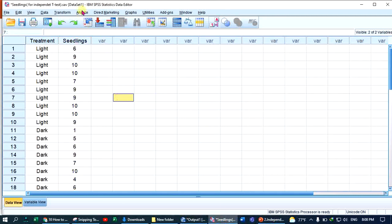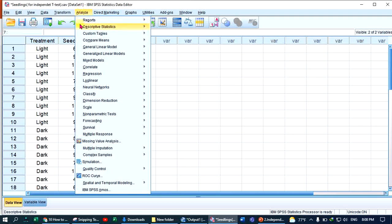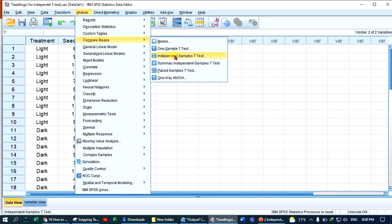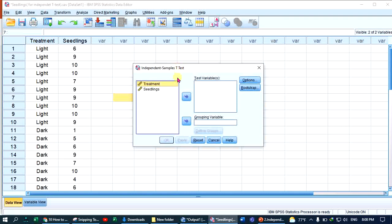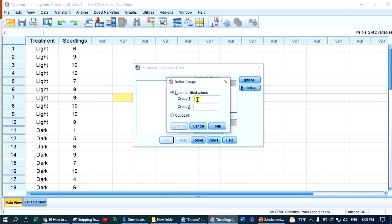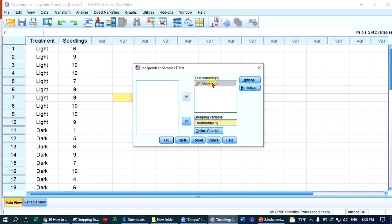To run the test, click on Analyze, then Compare Means, Independent Sample T-Test. Select the dependent variable seedling as the test variable. Treatment is the grouping variable. Define the groups: zero means dark and one means light. Then click Continue.